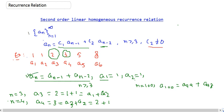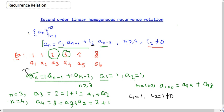Now comparing the Fibonacci recurrence with our general equation, the coefficient of the (n-1)th term is 1, so c1 equals 1. The coefficient of the (n-2)th term is also 1, so c2 equals 1, which is non-zero. So a_n can be written as c1 times a_{n-1} plus c2 times a_{n-2} with c1 equals c2 equals 1. This is one of our examples — this is what we call a second order linear homogeneous recurrence relation.